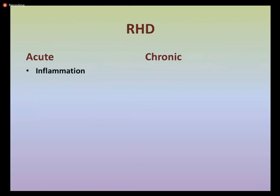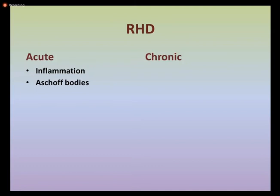In the acute form, it starts with inflammation at the molecular level, which causes formation of Aschoff bodies. These are nodules formed in the heart of individuals suffering from rheumatic fever and are characteristic signs of inflammation in the heart muscle. They also contain Anitschkow cells, which are enlarged macrophages found within the Aschoff bodies, also associated with rheumatic heart disease.